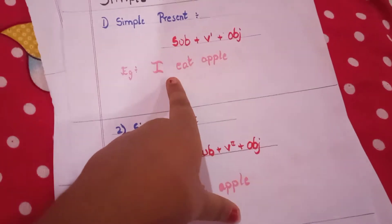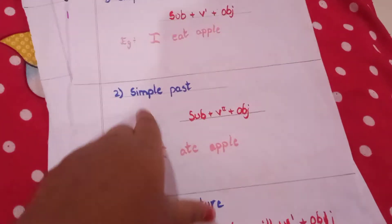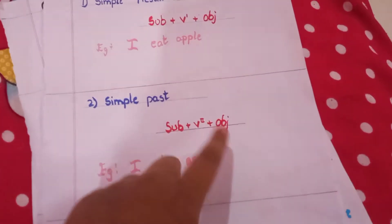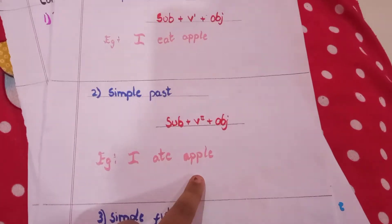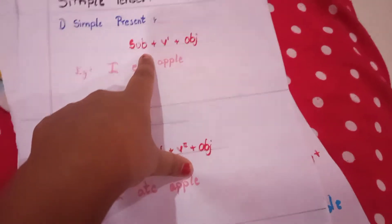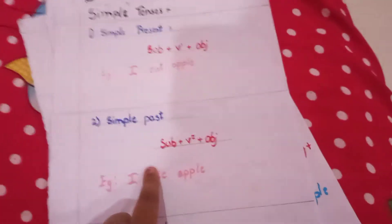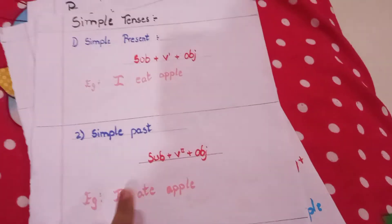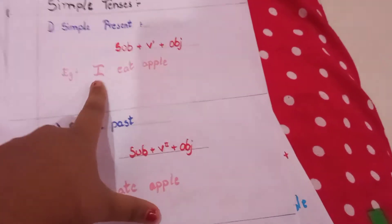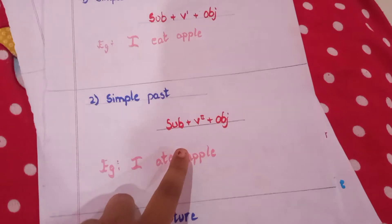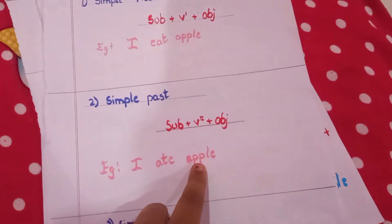Now let's convert into simple past. The formula for simple past is subject plus V2 plus object. Example: 'I ate apple.' Here 'I' is the subject, 'ate' is the V2 verb, and 'apple' is the object.